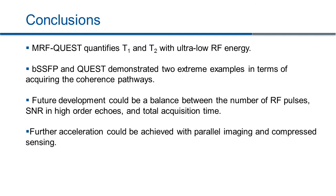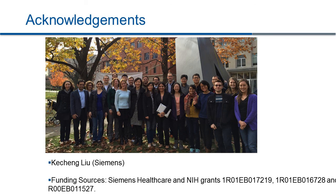In conclusion, we developed MRF methods with ultra-low RF energies. Balanced SSFP and QUEST demonstrate two extreme examples in terms of acquiring coherence pathways, and we think the optimized method may sit somewhere in between. Future development could balance the number of RF pulses, signal-to-noise ratio in high-order echoes, and total acquisition time. Further acceleration could be achieved by combining current methods with parallel imaging and compressed sensing. I would like to thank everyone in the MR research group at Case Western Reserve University, Kochen Liu at Siemens for technical support, and our funding sources. Thank you.